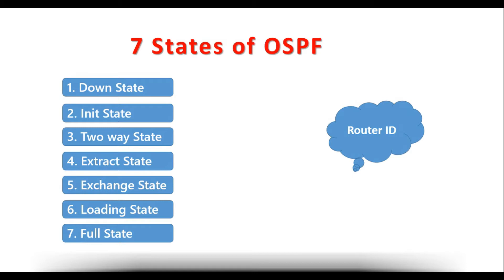If a router has a loopback IP address configured, then the loopback IP address is considered as the Router ID. If a router has multiple loopback IP addresses, then the highest among the loopback addresses will be considered as the Router ID. If a router does not have any loopback and has only physical interface IP addresses, then the highest among the physical interface IPs will be considered as the Router ID. With this Router ID, a router will go through the OSPF states to form the OSPF network.